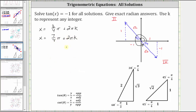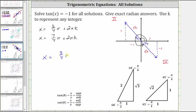While these two expressions give all the solutions, we can write them as a single expression by recognizing the tangent function has a period of π radians. Notice the terminal sides of these two angles point in opposite directions. Starting from 3π/4 and adding π gives 7π/4, and adding π again returns to an angle coterminal to 3π/4. So a simpler way to express all solutions is x equals 3π/4 plus πk radians.